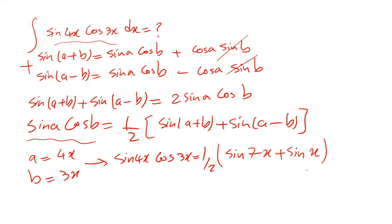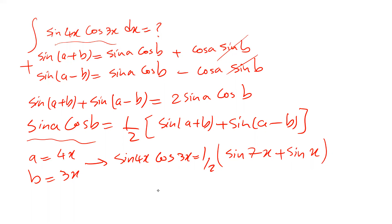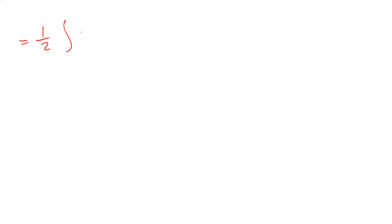Therefore the integral of sine 4x cosine 3x dx will be equal to the integral of one divided by two times sine(7x) plus sine(x) dx, which equals one divided by two times the integral of sine(7x) plus sine(x) dx.